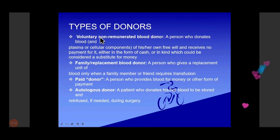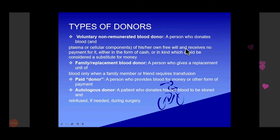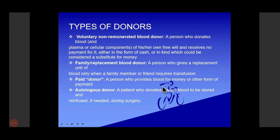There are four types of donors. A voluntary donor donates blood of their own free will and receives no payment. A family replacement donor gives blood only when a family member or friend needs transfusion. A paid donor provides blood for money or other forms of payment. An autologous donor is a patient who donates their own blood to be stored and re-infused during surgery if needed.